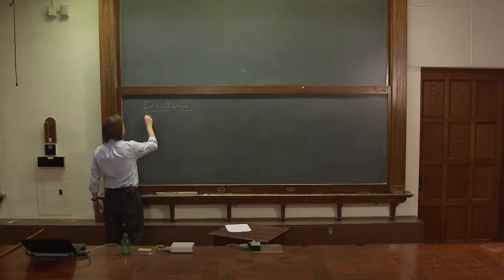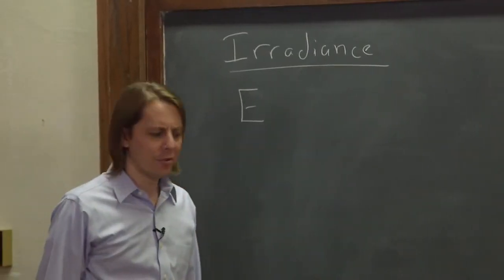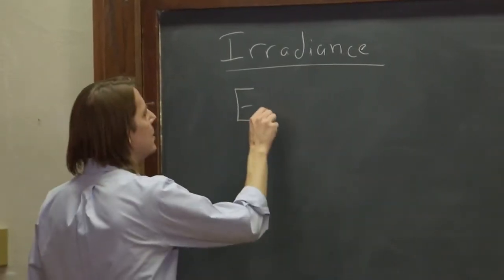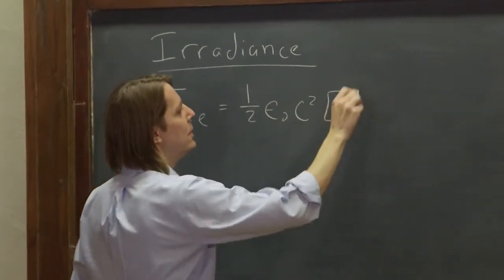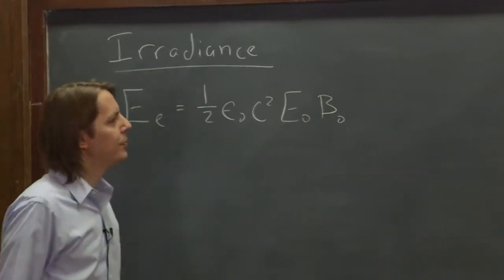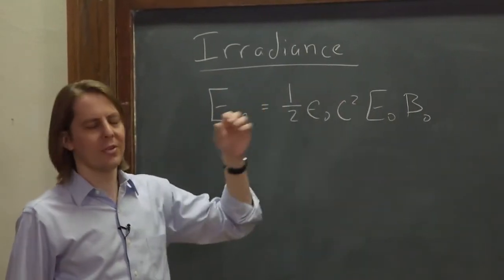So we derived an expression for the irradiance. Remember, it was the time average of the Poynting vector, and it was E_c equals one-half epsilon-naught c squared E-naught B-naught. Because remember, the Poynting vector was E cross B, or some constants in E cross B.